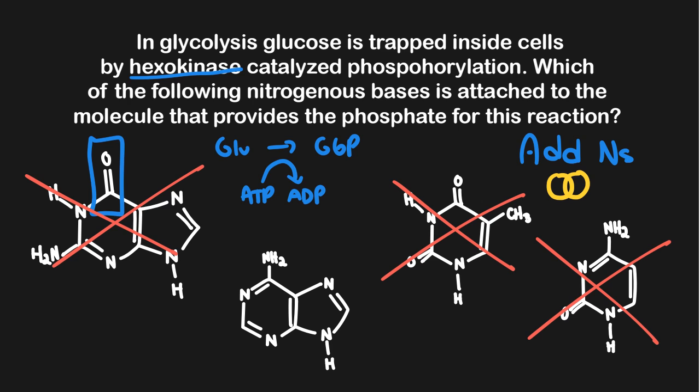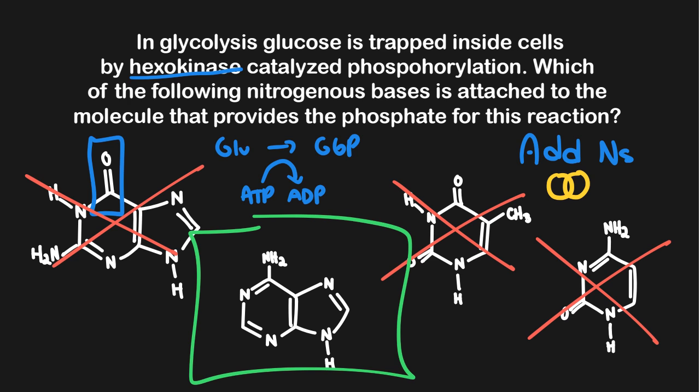That leaves us with one answer choice, and that is the structure of adenine. This is really helpful because we can look and see that, in fact, it has nothing but nitrogens throughout the entire molecule. Therefore, we can be sure this is the right answer — not just by process of elimination, but also using the mnemonic for the adenine molecule.